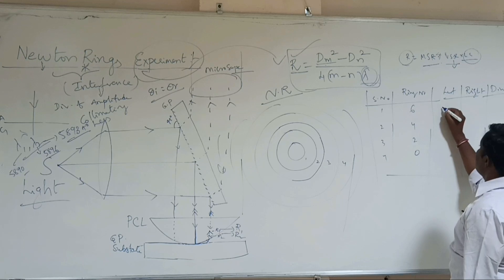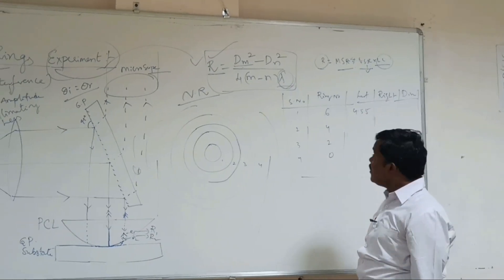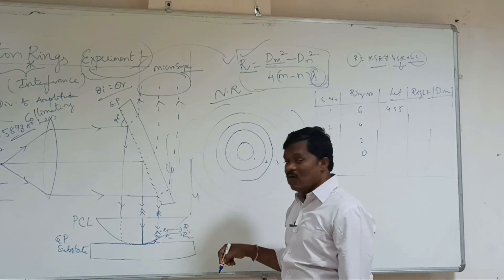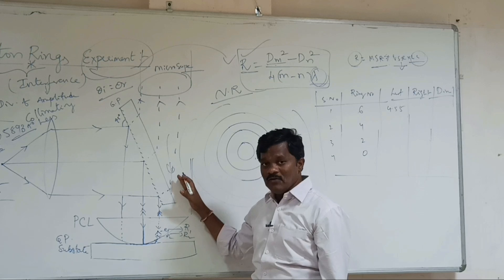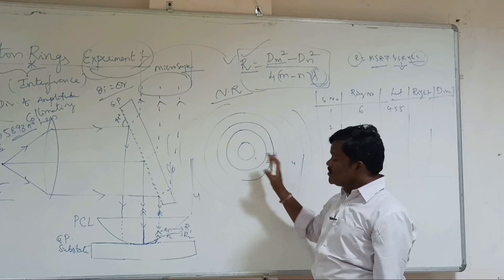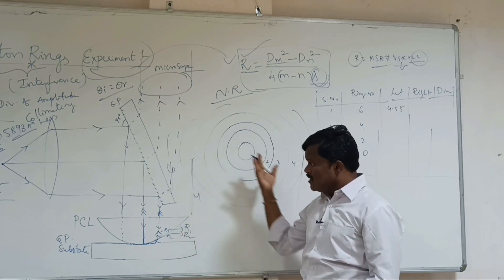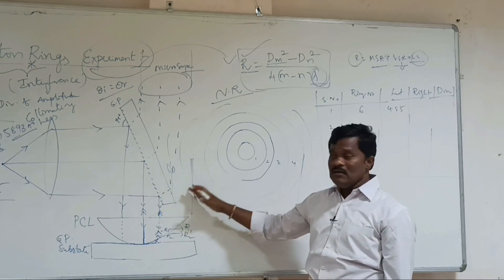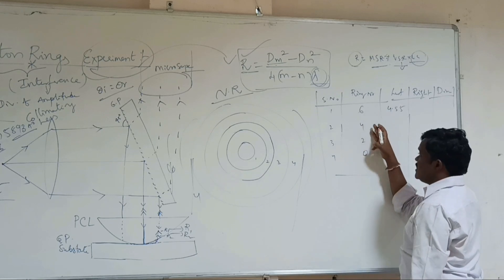The 6th ring reading may be, say, 4.5 or 5.5 — just as an example. Then move the microscope to the 4th ring and take that reading. Then the 2nd ring. You can ask why we skip to 6th and 4th — you can take 5th as well, no issue. But preferably go up to the 10th ring, then 8th, 6th, 4th, 2nd. Just for this example, I have taken 6, 4, 2, 0.